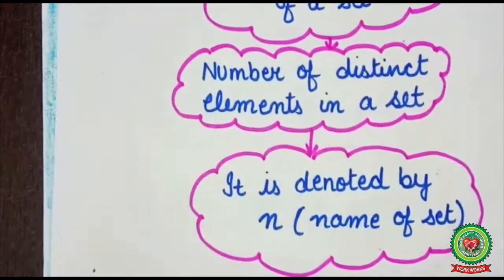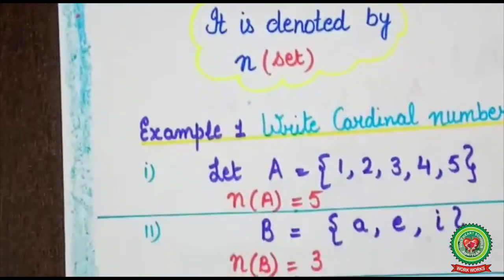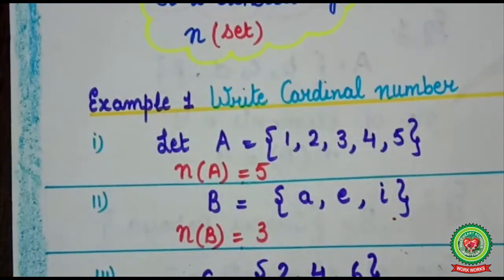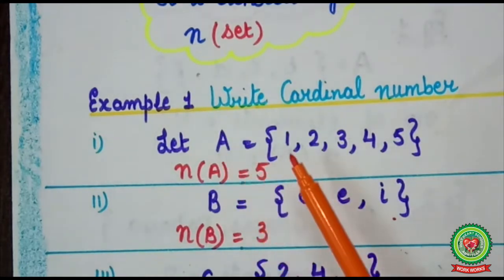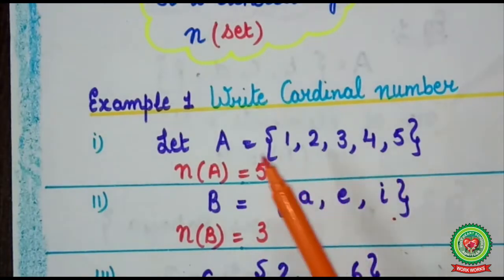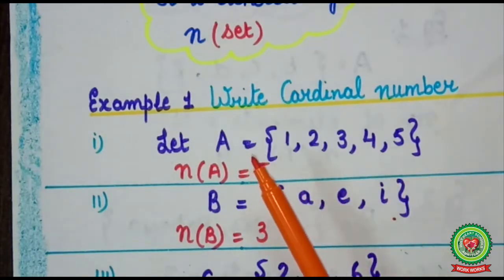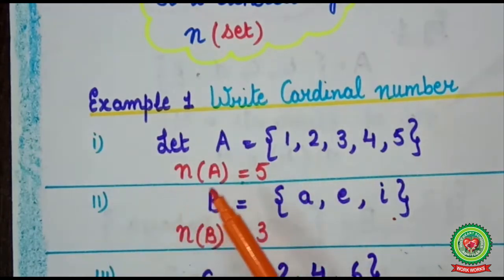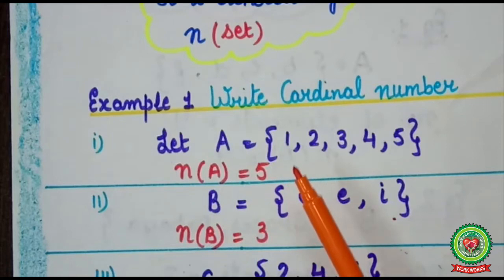Let's understand with a few examples. Write the cardinal number of the sets given in roster form. Here set A has elements 1, 2, 3, 4, 5. So the number of elements in set A are 5. Therefore, the cardinal number of A is 5, that is n(A) = 5.